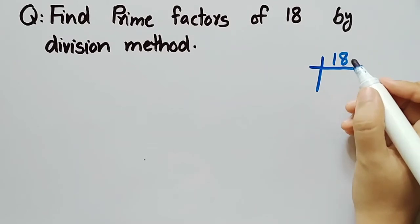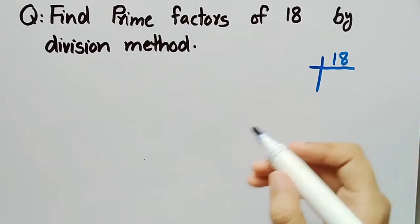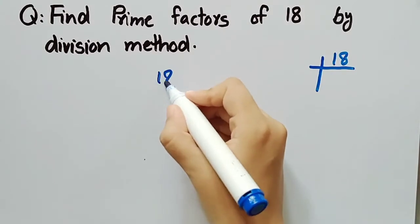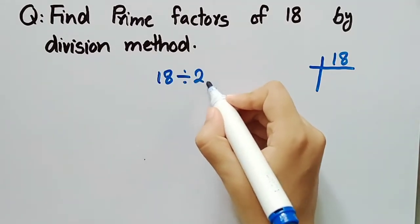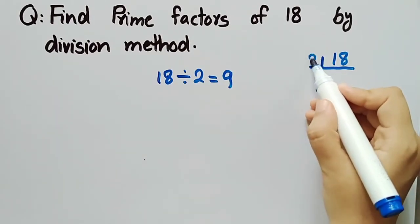Start with the smallest number that divides 18 completely. 2 is the smallest prime number that divides 18 without leaving a remainder. Since 18 divided by 2 is equal to 9, we write 2 on the left side of 18, separating them with a line.